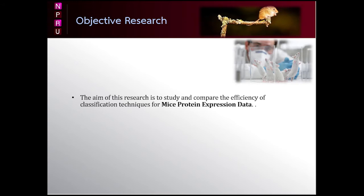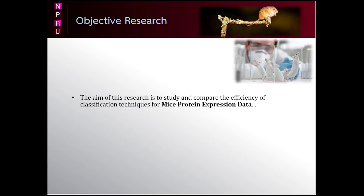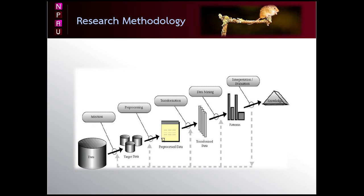The aim of this research is to study and compare the efficiency of classification techniques for mice protein expression data. I will give you the details of the data mining implementation process. There are six steps as follows. The first step: Data understanding. In this phase, mice protein expression data set which is used in our research is studied. The data set is collected from Kaggle website.